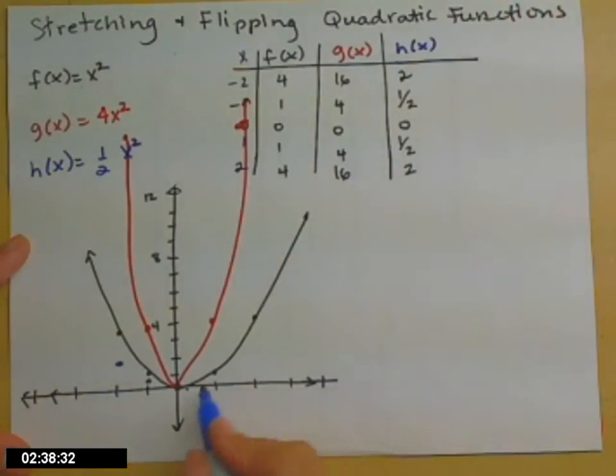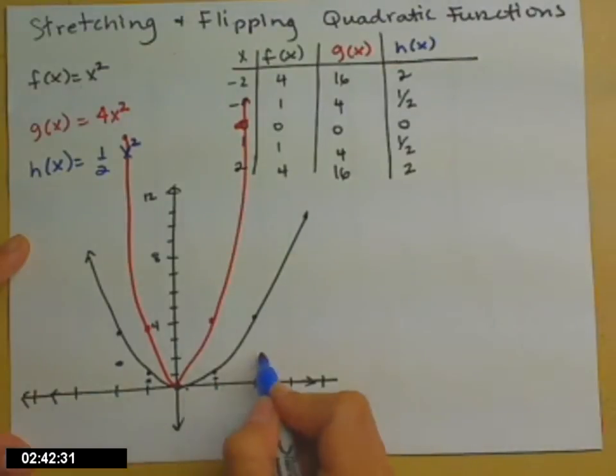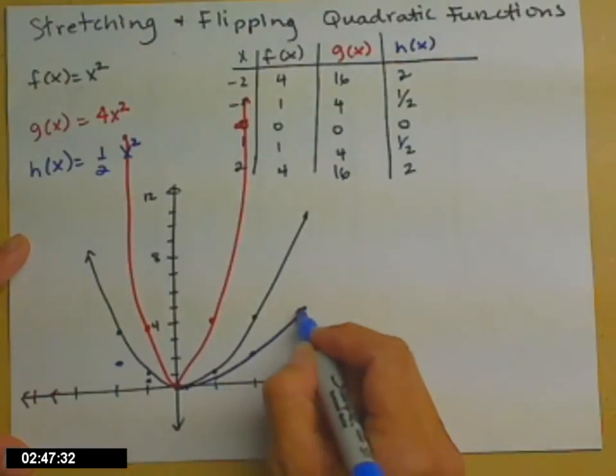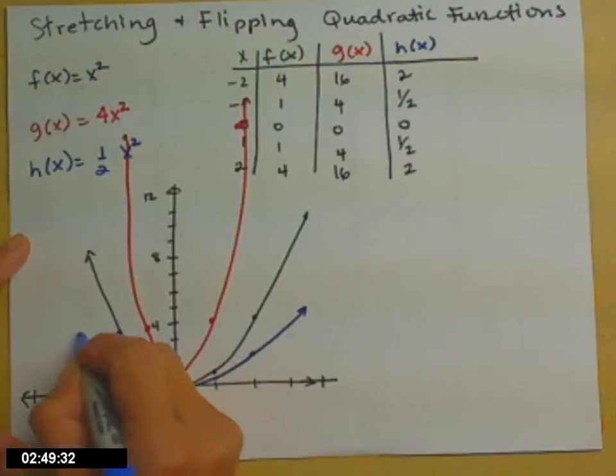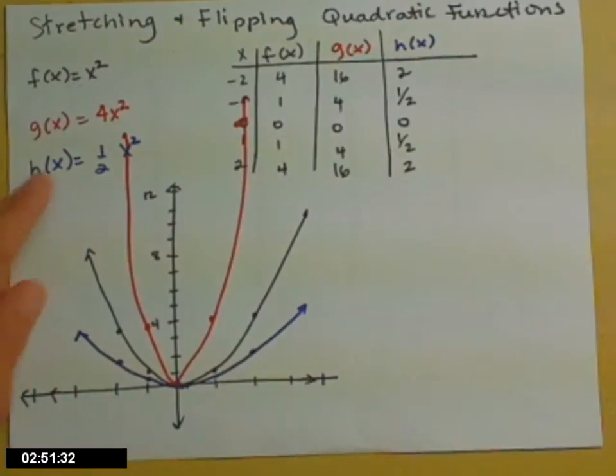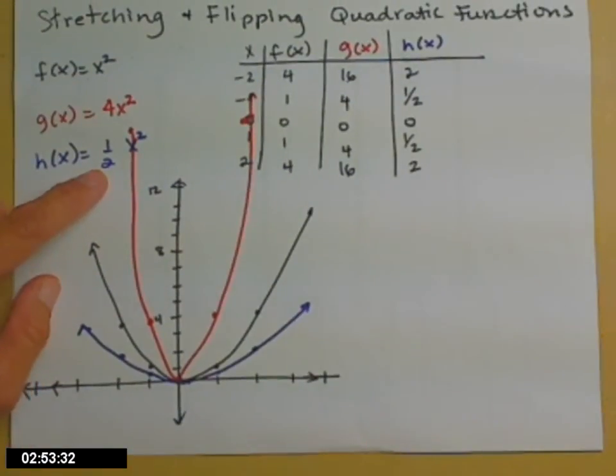(0,0) we still have. (1, ½). And (2, 2). So if that coefficient of your x² term is a fraction, it makes a wider parabola.